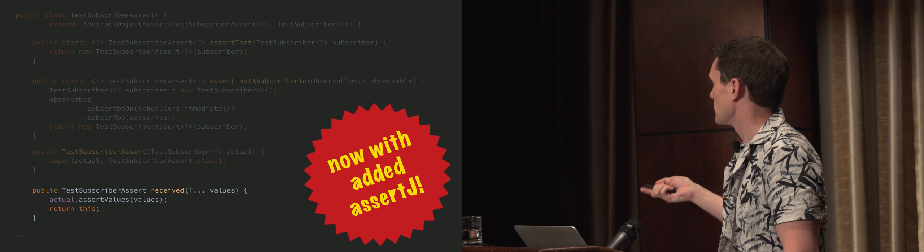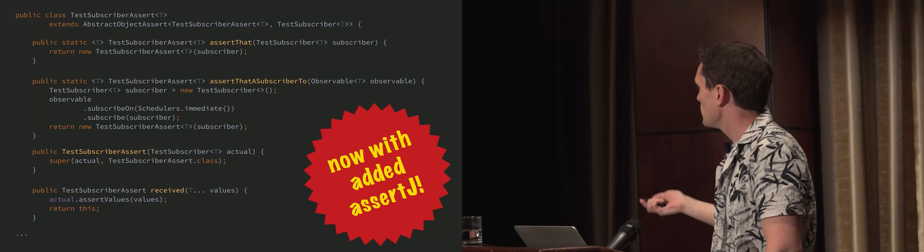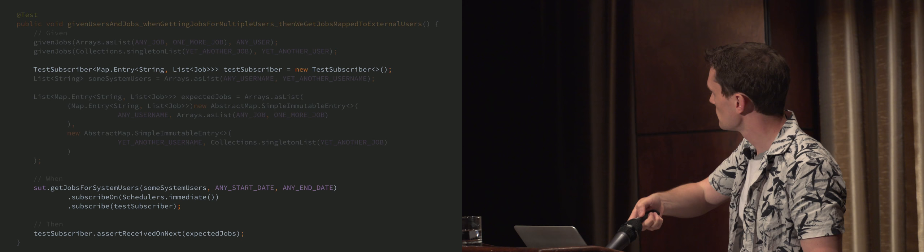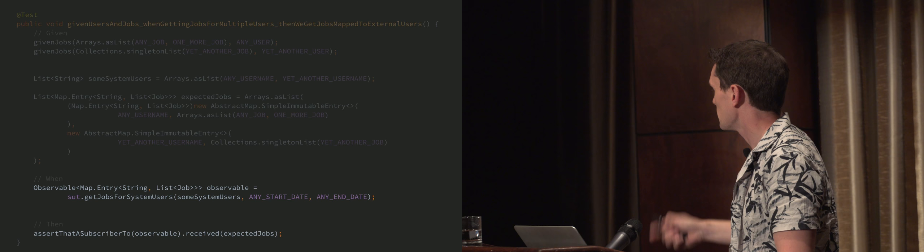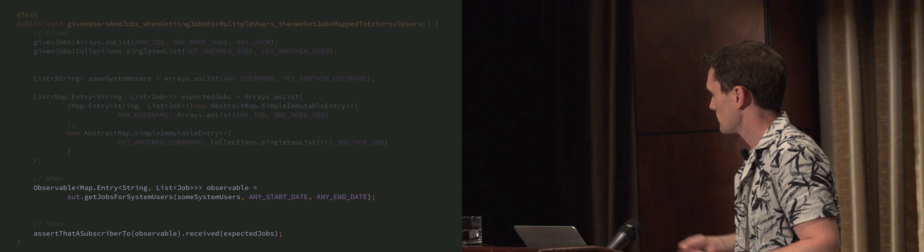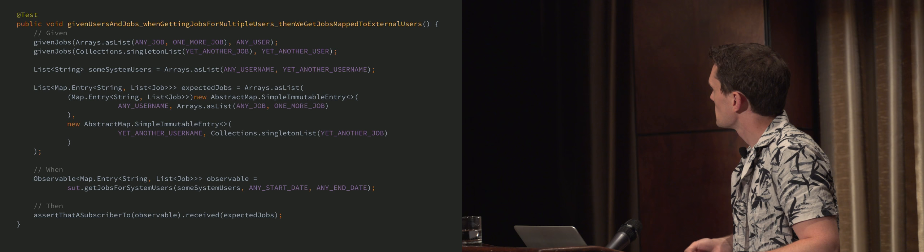We can introduce a class like this — a simple little thing — where basically we've got a little static factory method that will give us back this assertion object. We've basically chucked in the scheduling stuff and the subscription in here, so we can keep all of that just out of the test. Because whenever you're doing anything with Rx, you're going to want to do this stuff all the time — so why write it in every single test and have it polluting every single test with noise? And then we can have these simple little methods on here for checking things. So if we use this and put it into our test, we can get rid of that line.